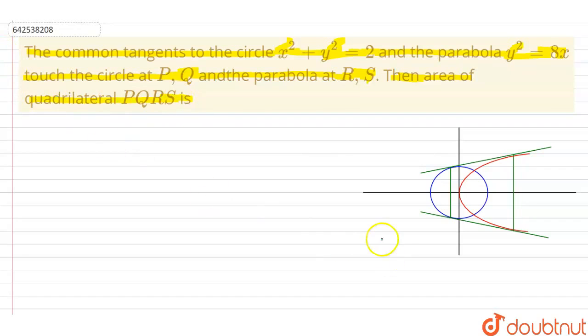Now the required figure is this where the circle has the equation x² + y² = 2 and the parabola has the equation y² = 8x, and here these are the two common tangents